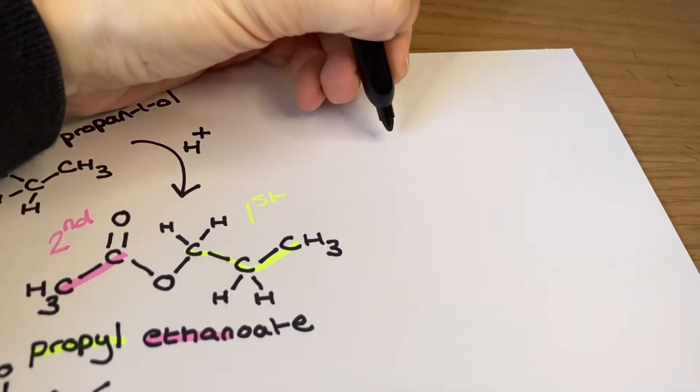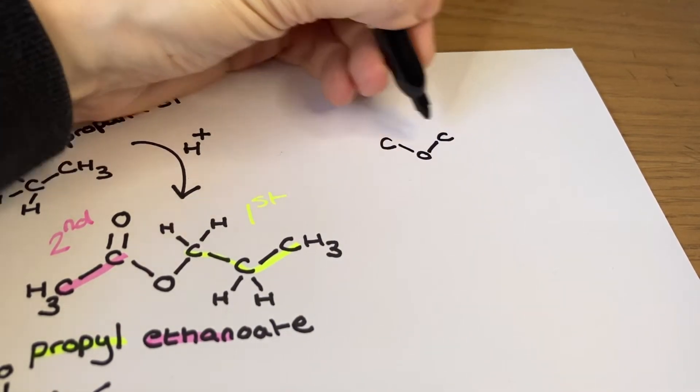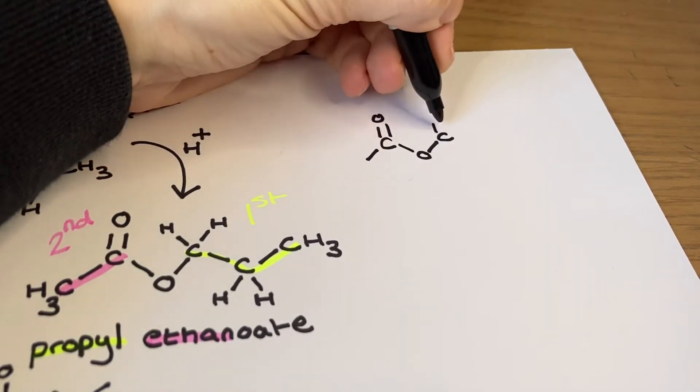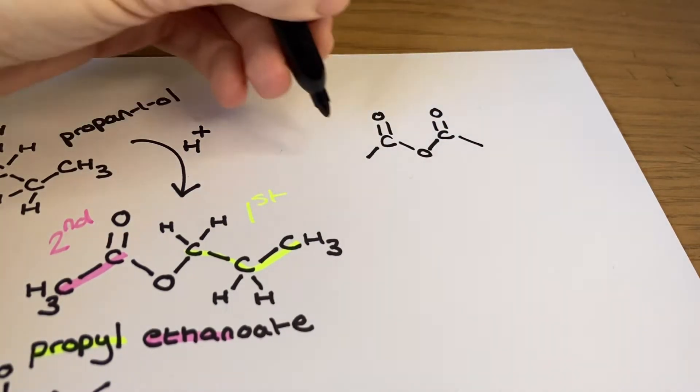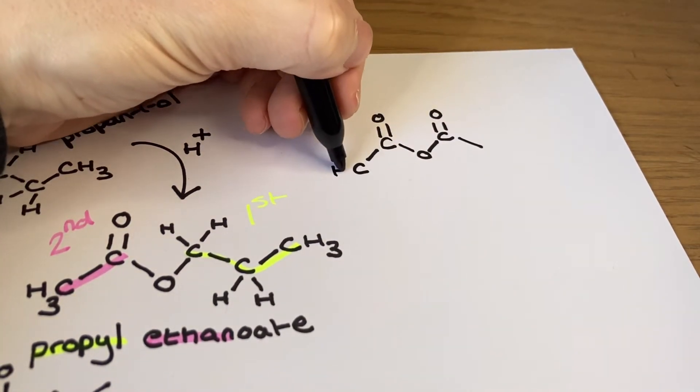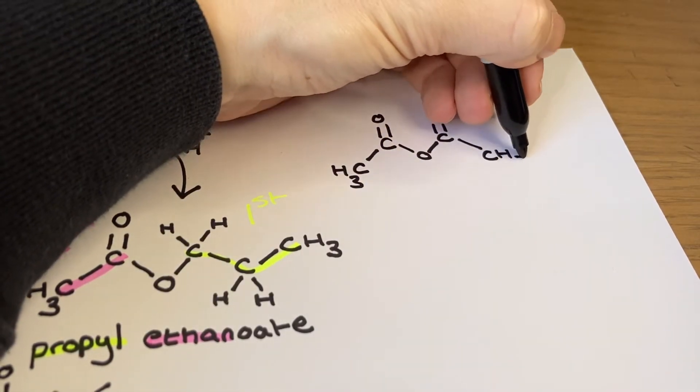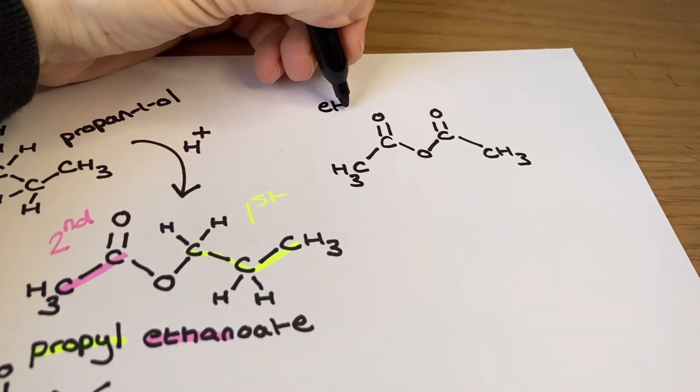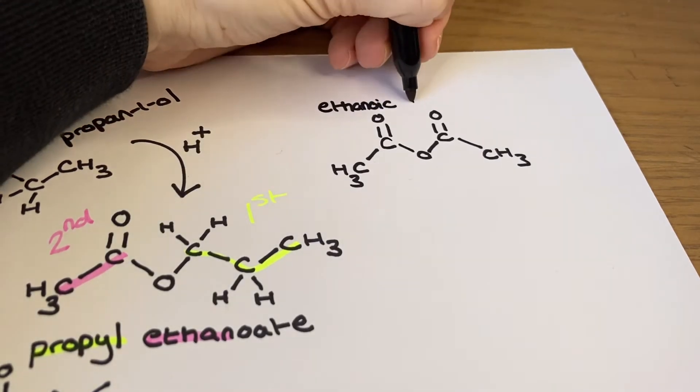My second reaction to produce my ester uses the same propan-1-ol alcohol, but instead of a carboxylic acid I can use an acid anhydride. These are quite large organic structures and will react with the alcohol without the use of a catalyst. This acid anhydride is called ethanoic anhydride, despite actually having four carbons in total.